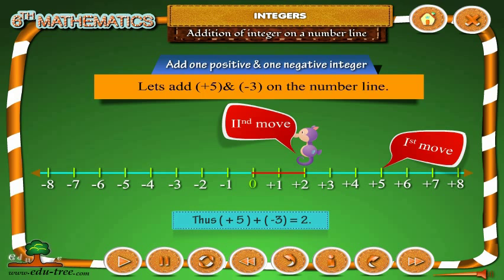Thus, plus 5 plus minus 3 is equals to 2.